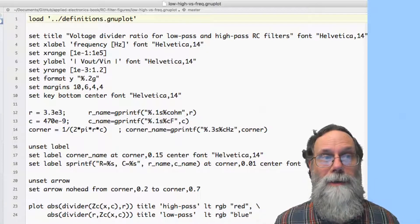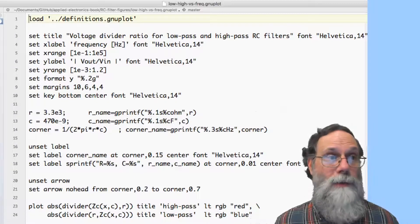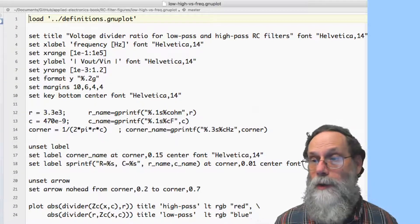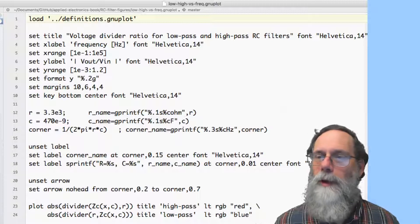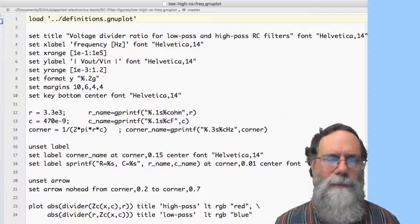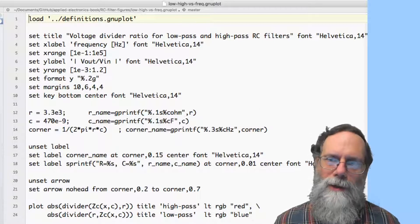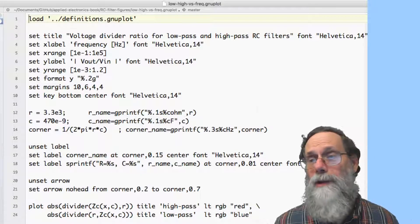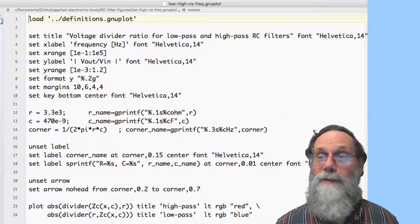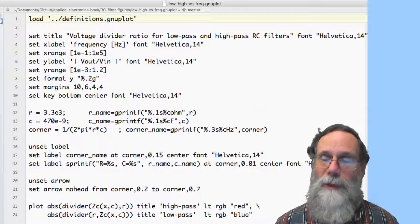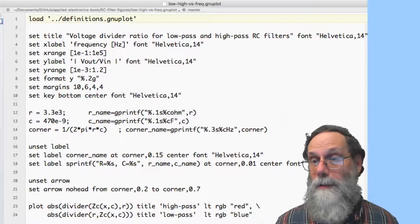I set a y-label here. Here I'm saying it's the magnitude of vout over vin. And again, I made it in a big font. Here I set the yrange to be from a gain of 1/1000th up to a gain of 1.2. I set the yformat to automatically pick whether to use exponent format or fixed format. I set some margins here. Again, this is fancy stuff. You don't really have to set margins. But if you're finding that something like your x-label runs off the side, you can increase the margins a little bit. Here I set the key bottom center rather than bottom left, and I again set the font to be big.